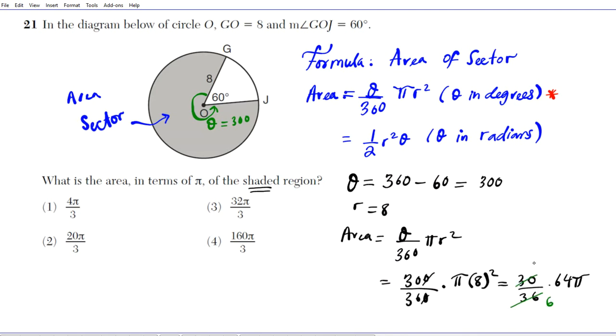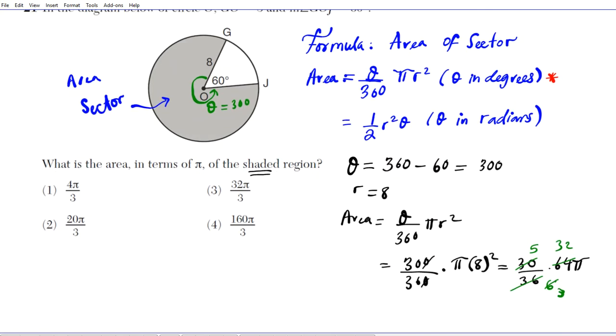And then 2 goes into 6, 3 times, and then 2 goes into 64, 32 times. So we just have 5 times 32 times 2 times pi. That will give us the area of the sector.